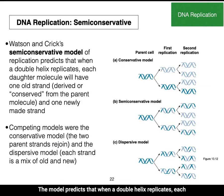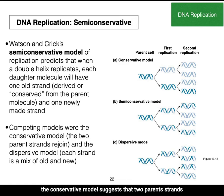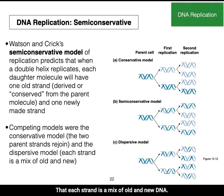This is known as the semi-conservative model of replication. The model predicts that when a double helix replicates, each daughter molecule will have one old strand and one newly made strand. The conservative model suggests the two parent strands rejoin, while the dispersive model suggests each strand is a mix of old and new DNA.